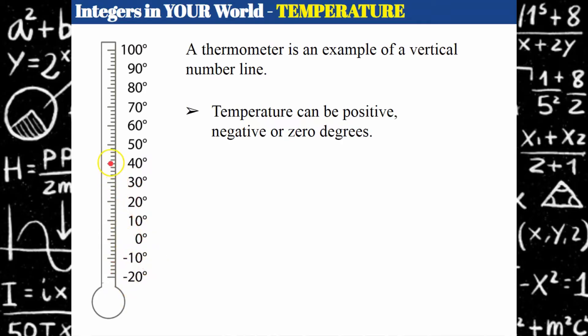Note that you could have 42 degrees and you could have 42 and a half degrees. So not all temperature values are integers, but some temperature values are. If you say 42 degrees, that's an integer. If you say that it is 40 and a half degrees or 40.7 degrees, that does not represent an integer.